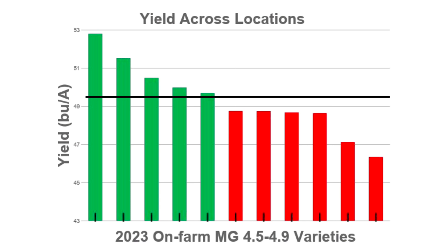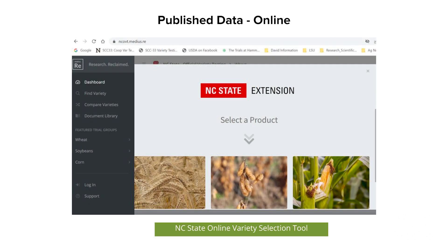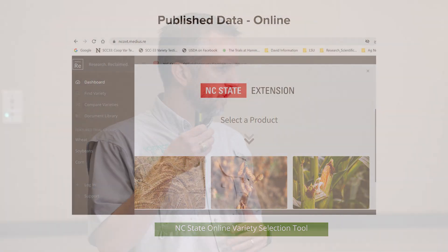Here we had 11 varieties grown on the farm. The average yield is shown by the black bar — six varieties fell below average yield and five were above average, across locations. You can find this data in hard copy, such as the LSU AgCenter variety data, or online. North Carolina State also has online tools that make it easier to sort through variety data.